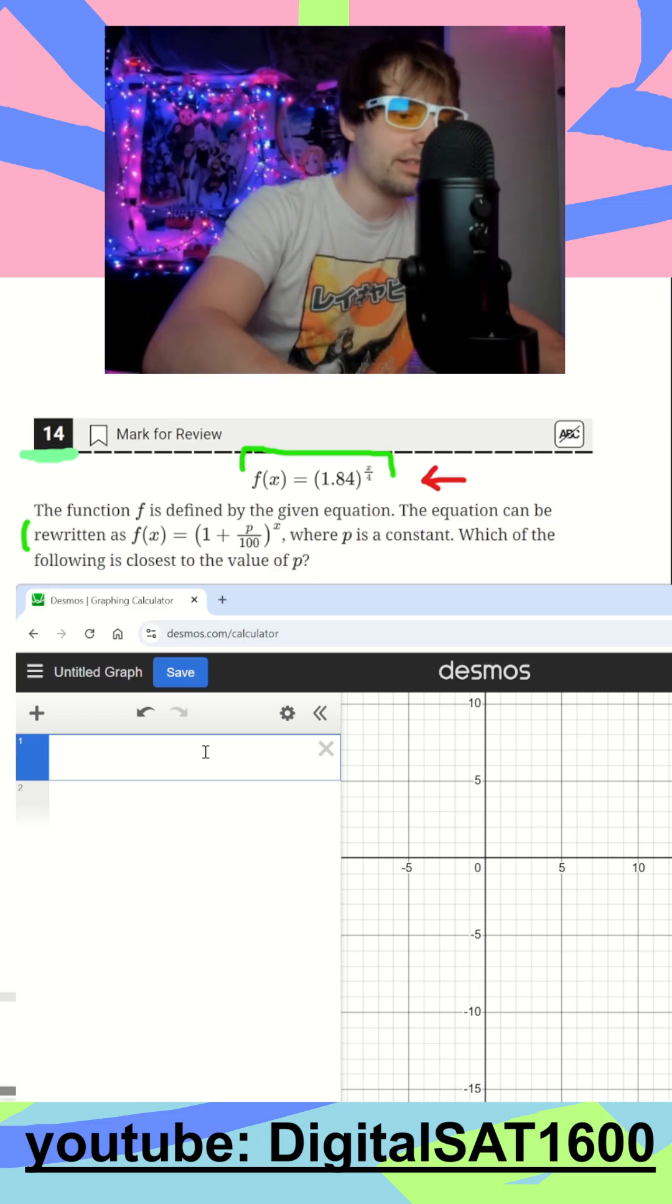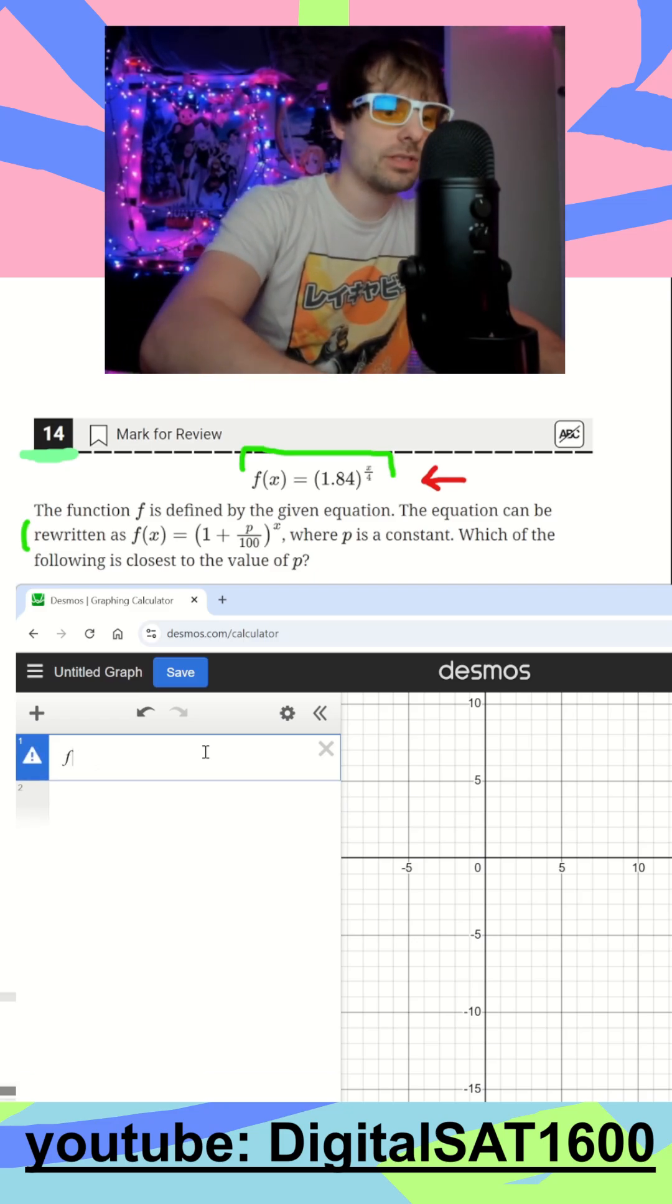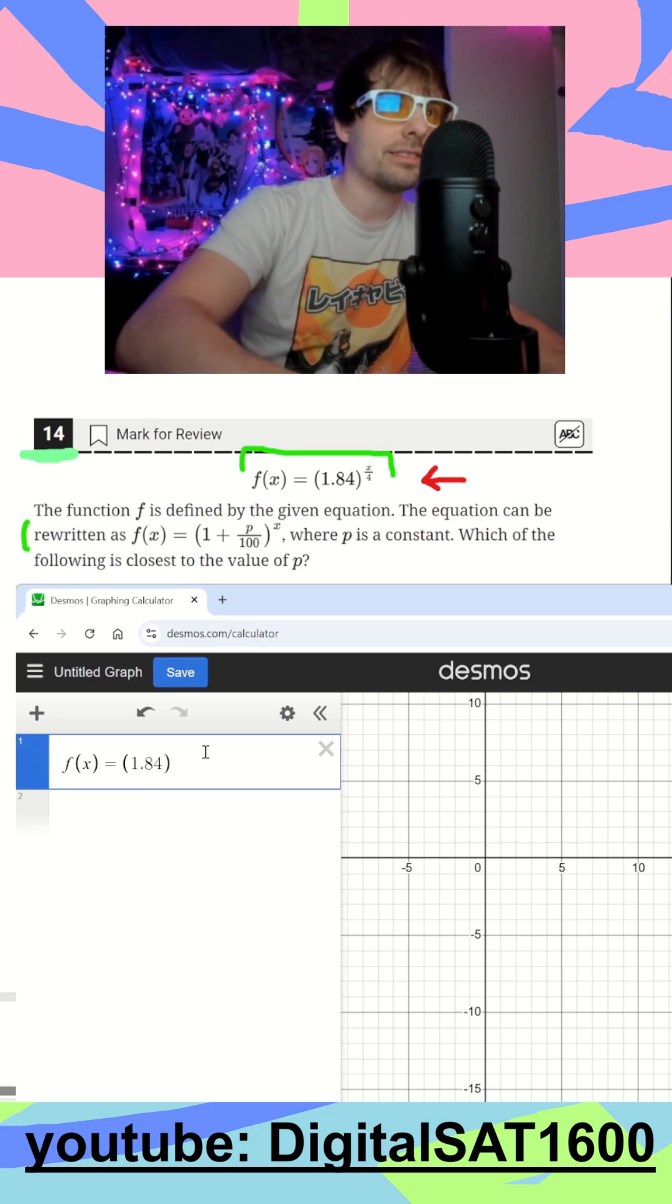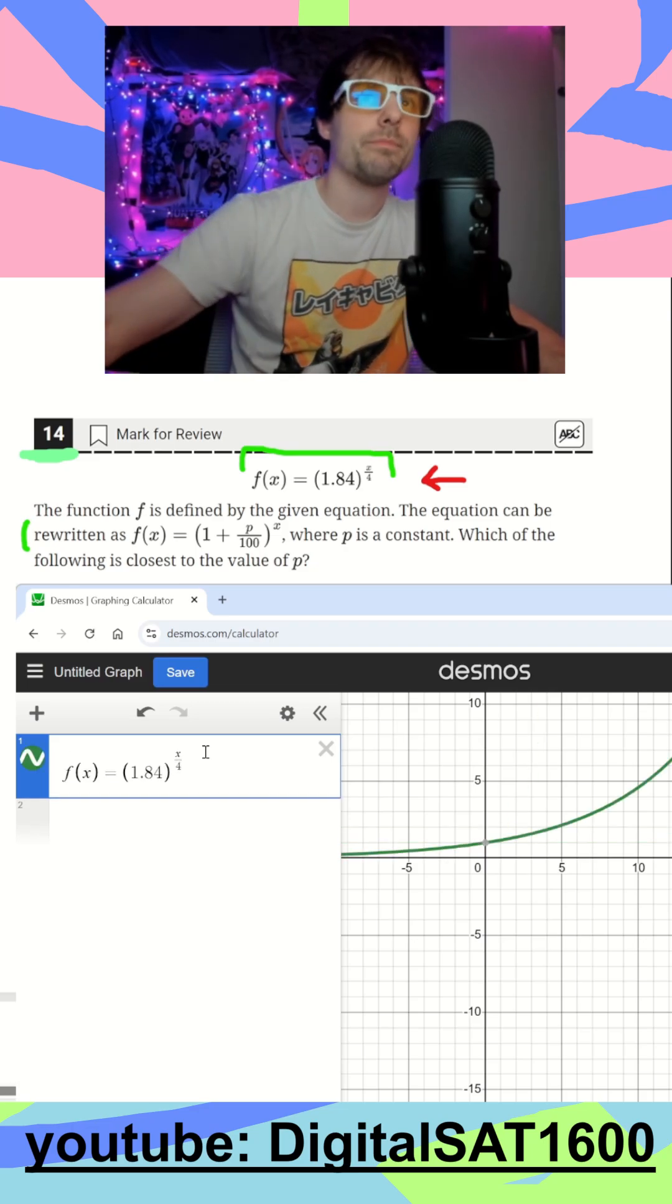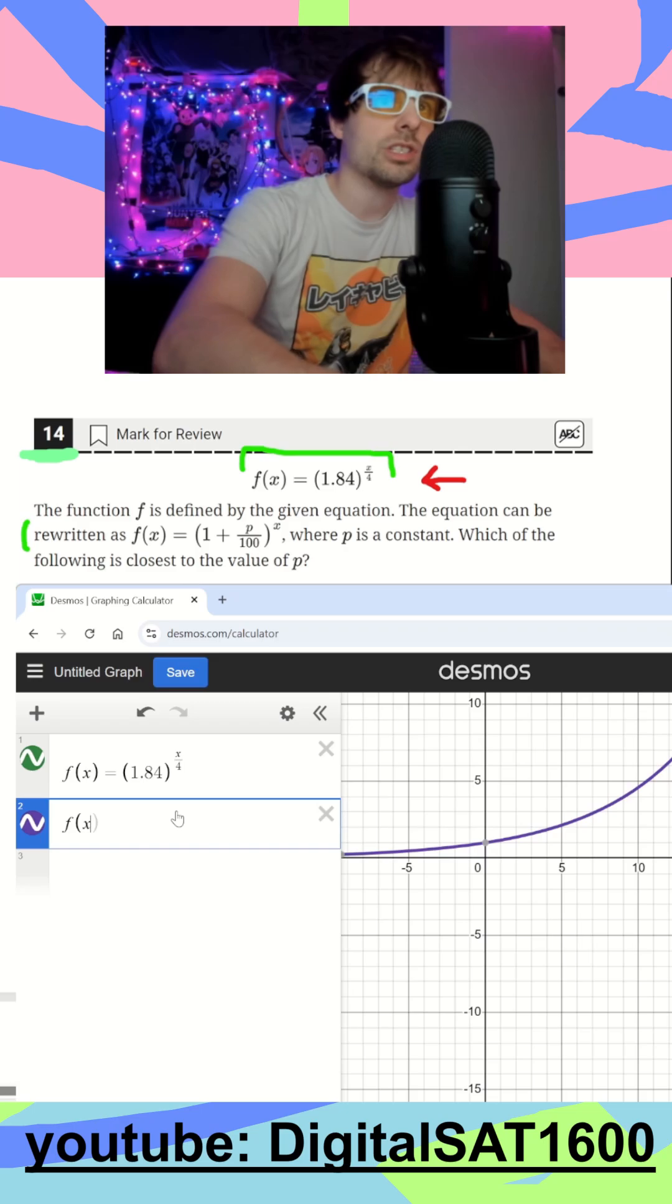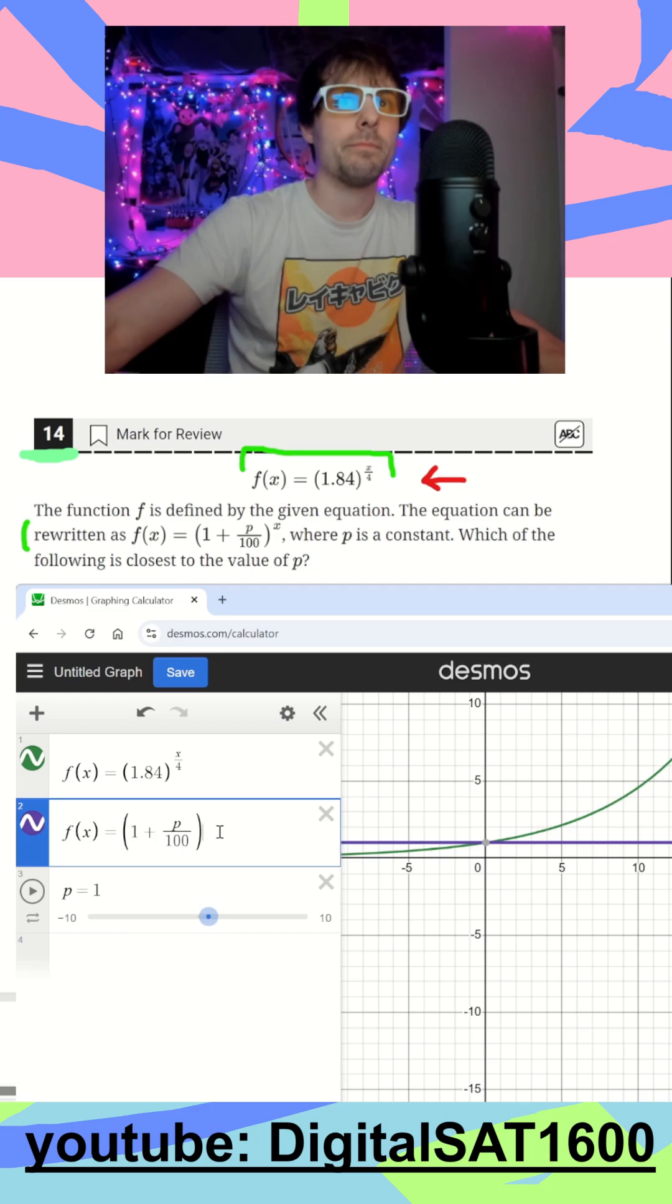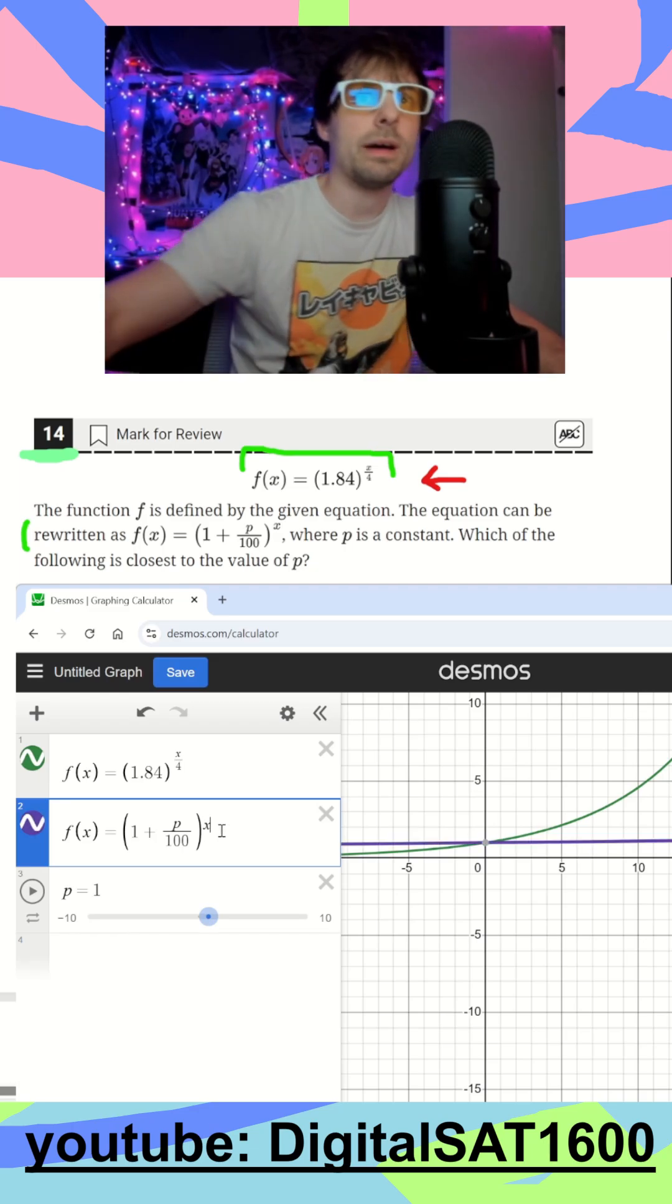Function one is going to be f of x is equal to 1.84 raised to the x divided by 4. Our second function, also f of x, is equal to 1 plus p divided by 100. Let's throw that slider in there and then raise this to the power of x.